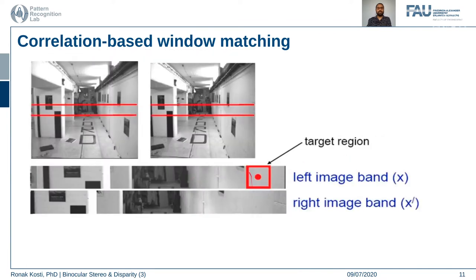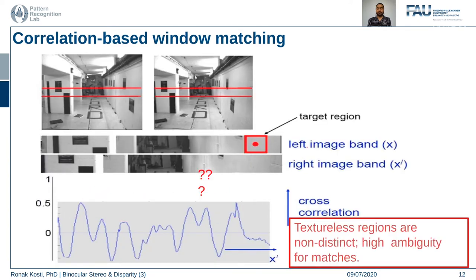However, there are problems with this. What if we choose a featureless window or our window size is not appropriate? Visually we might identify a distinctive feature, but if the window misses that feature point, the intensity profile shows multiple maxima — meaning there are multiple candidate matches with no clear true correspondence. Textureless regions are not good feature points; they are not distinct enough, and there is high ambiguity for such matches.